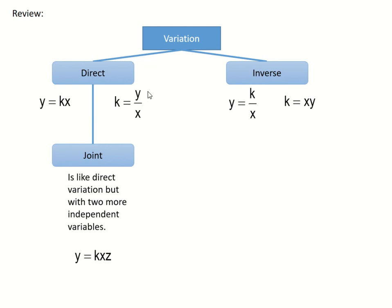In getting the k value for direct, we make use of division, for inverse, we make use of multiplication. Now, another type of direct variation is joint. The process of solving problems in joint variation is the same as that in direct. The only difference is that in joint variation, we have more than two, we can have more than two independent variables.